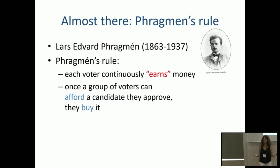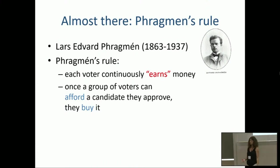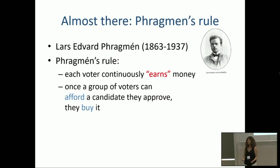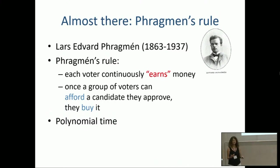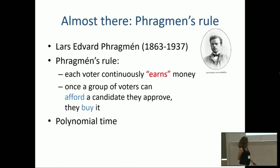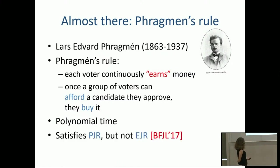Under Phragmén's rule, each voter starts with zero money and continuously earns money. Each candidate starts with a uniform price. When a group of voters who jointly approve a candidate have enough money to buy that candidate, they buy it — it's added to the committee and money is deducted from their allowances. The process continues until K candidates are selected. This is by construction polynomial time. What that group showed is that it satisfies PJR but not EJR.